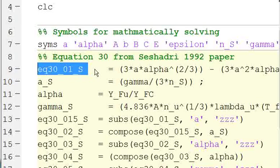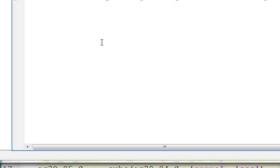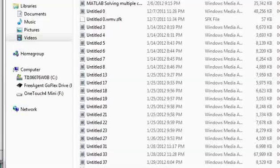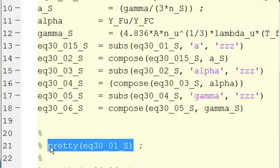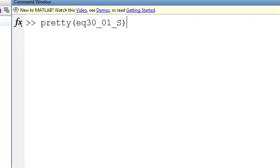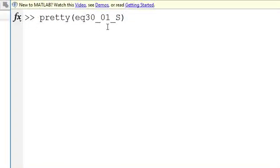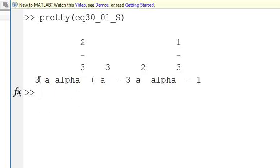So then we define this. If I run this and then I go to the command window, I'm going to use the pretty command to look at the equation I just made. So I can go to the command window, I can type in pretty, and then the name of the equation, I hit enter, and my equation pops up. You can see I have 3A alpha to 2 thirds plus A cubed minus 3A squared alpha to 1 third minus 1.